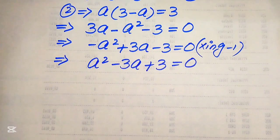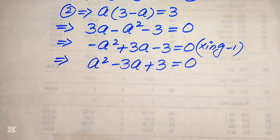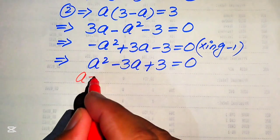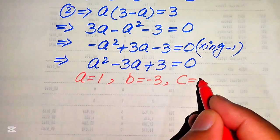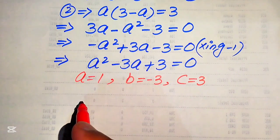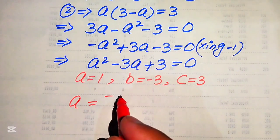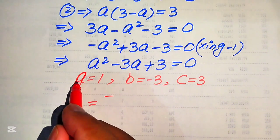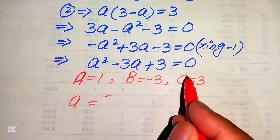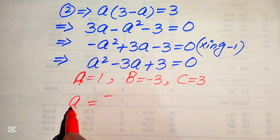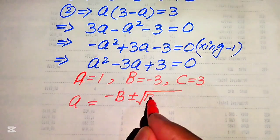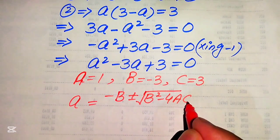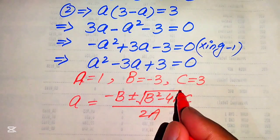This is now a quadratic equation in A, so we apply the quadratic formula. The coefficients are: a equals 1, b equals minus 3, and c equals 3. The quadratic formula gives small a equals minus B plus or minus square root of B squared minus 4AC, divided by 2A.